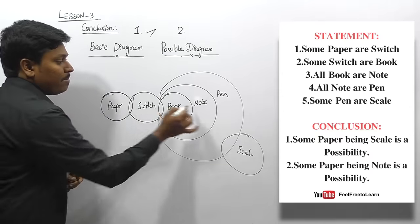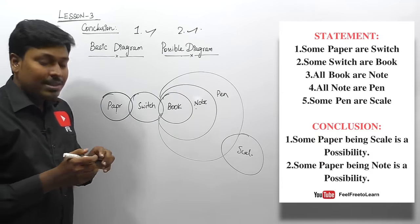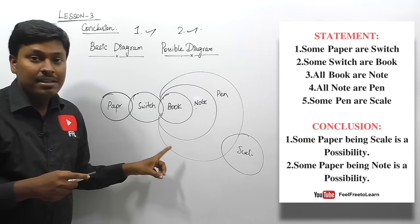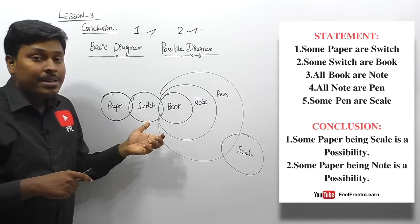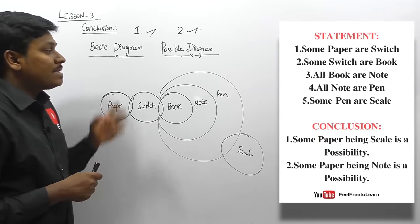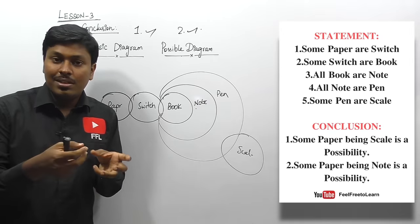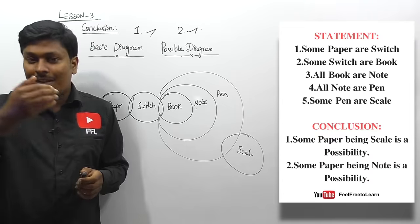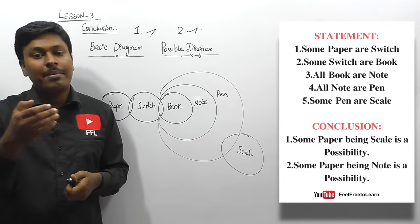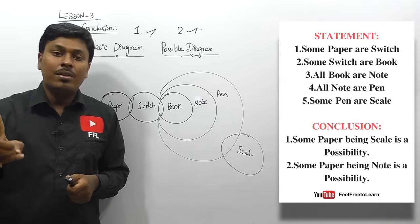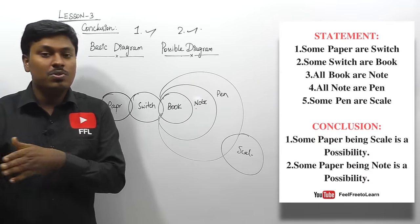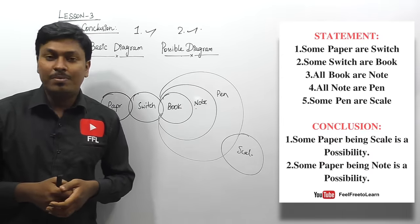To summarize the key difference: in lesson 2 (no conclusion), if all parameters are inside a single Venn diagram, no conclusion is false. In lesson 3 (possibility conclusion), if all parameters are inside a single Venn diagram, possibility is always true. After watching lessons 1, 2, and 3, practice many questions based on possibility, no, some, and all. Then watch lesson 4, which covers 'some not' conclusions. Thank you for watching — share this with friends preparing for competitive exams.